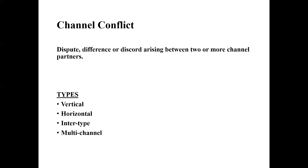Now, inter-type channel conflict. These types of conflict commonly arise due to scrambled merchandising, where a large number of retailers go out of their way to enter a product line from their usual product range to challenge smaller concentrated retailers. When manufacturers use multiple channels for selling products or services, they may face multi-channel level conflict where the partners involved in the distribution channel encounter issues.